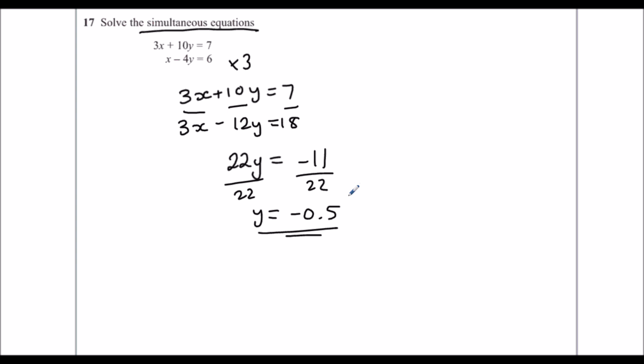Then I need to find out what x is. So I'm going to substitute this into the original. So up here, substitute y is minus 0.5. So 3x plus 10 times minus 0.5 equals 7. 3x minus 5 is 7, plus 5 to both sides.